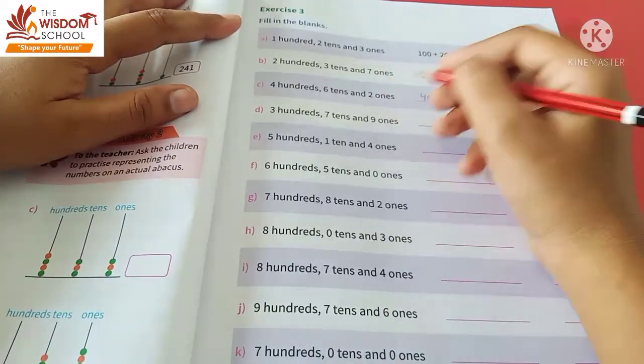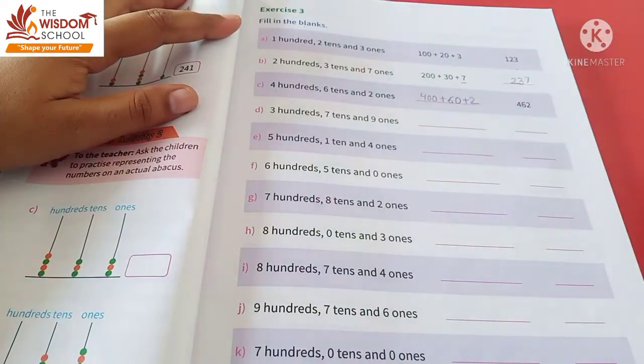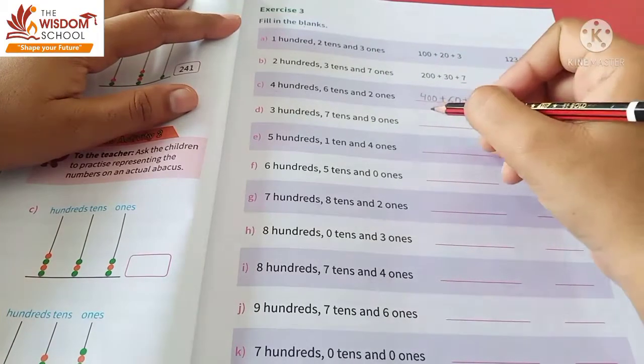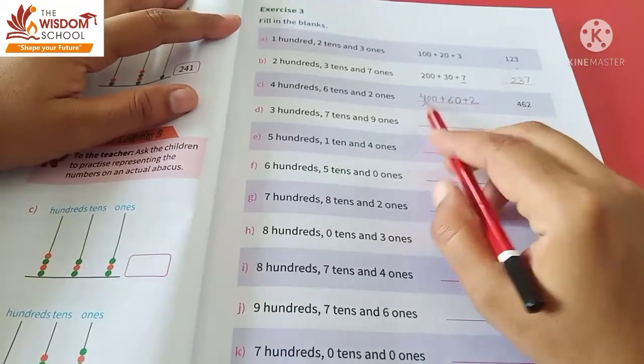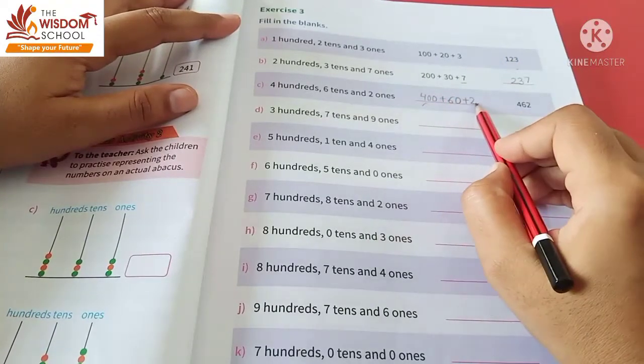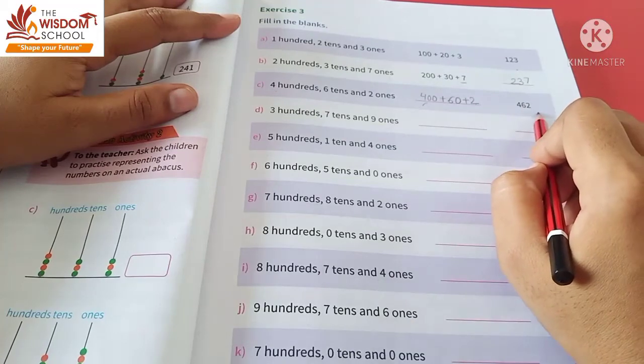2 ones. And 400 plus 60 plus 2 makes a three-digit number, that is 462.